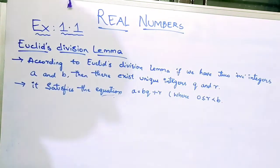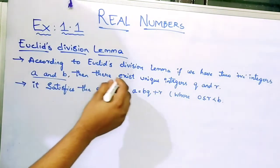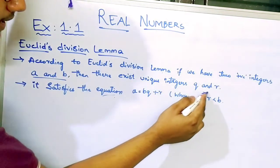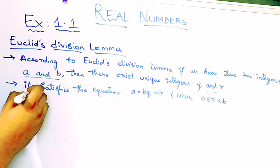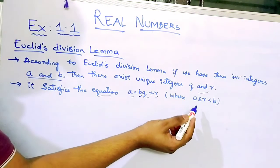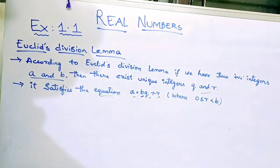We are going to learn about Euclid's division lemma. According to Euclid's division lemma, if you have two positive integers A and B, then there exist unique integers Q and R that satisfy the equation A = BQ + R, where R is greater than or equal to 0 and less than B.